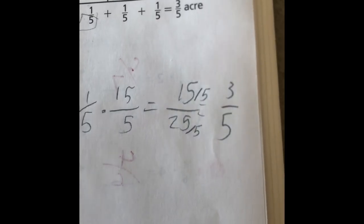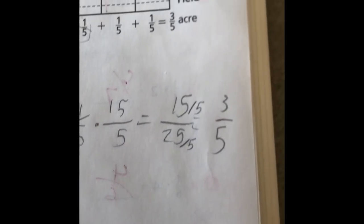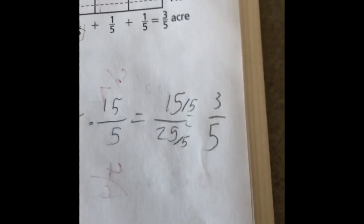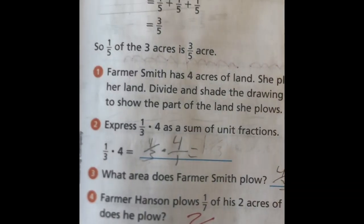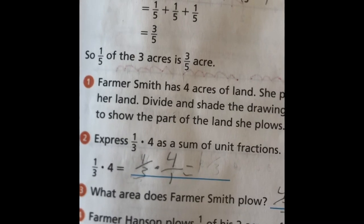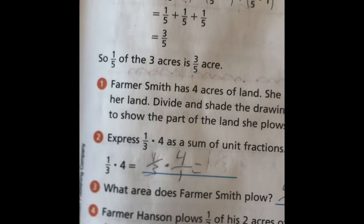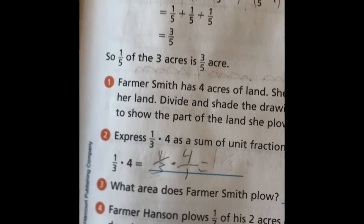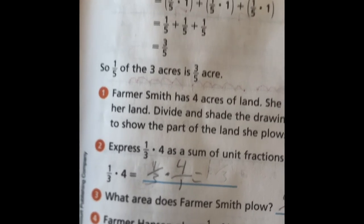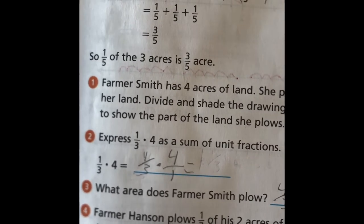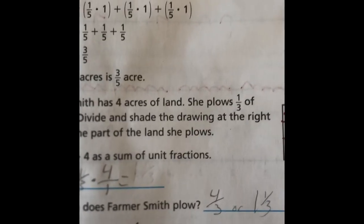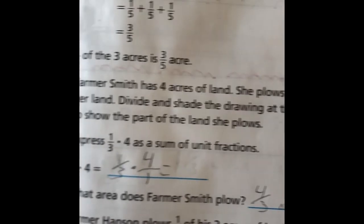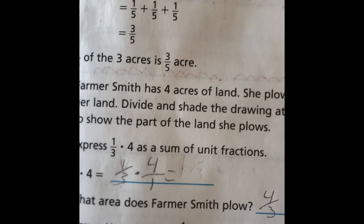So now that I've modeled one problem by myself, I want us to do one together. The next problem is Farmer Smith has four acres of land. She plows one-third of her land. Divide and shade the drawings at the right to show the part of the land she plows.